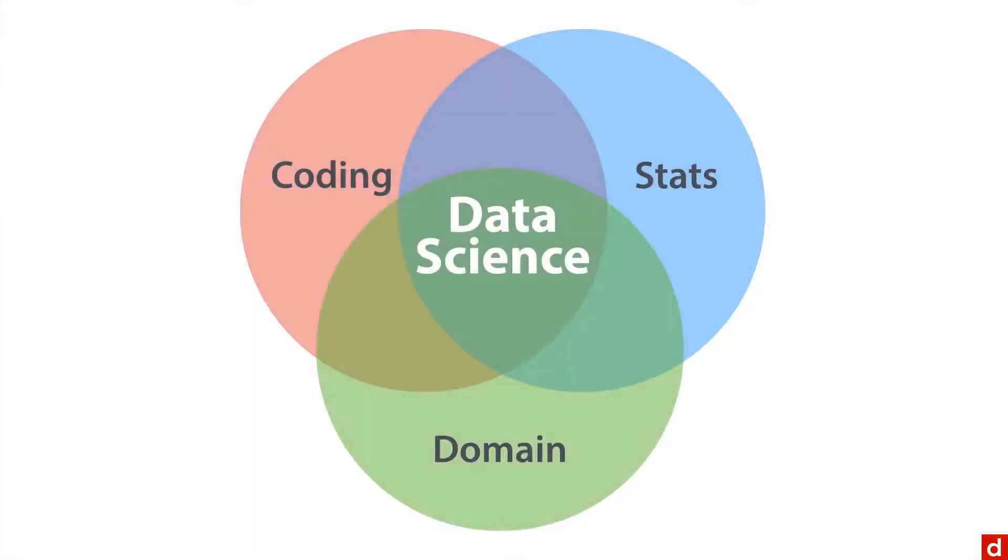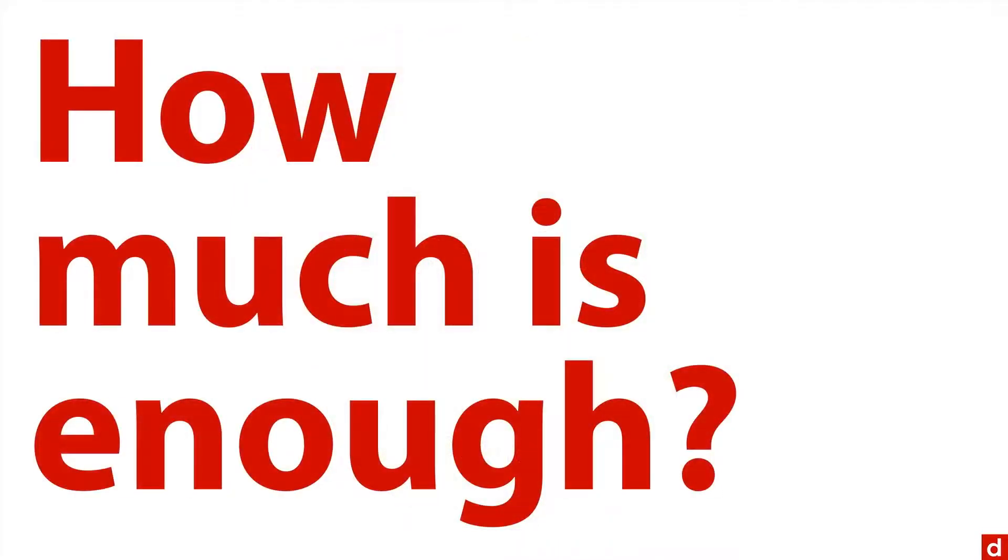If you go back to the data science Venn diagram, we've got stats up here in the right corner, but really it's math and stats or quantitative ability in general. We'll focus on the math part right here. The most important question is how much math is enough to do what you need to do?